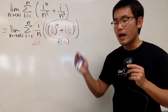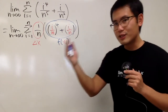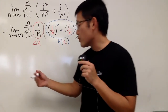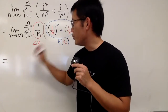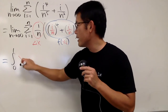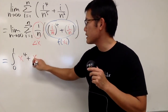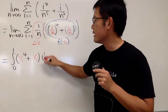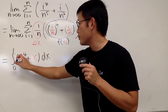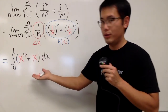So we're looking for the area under the curve x to the fourth plus x, from 0 to 1. And of course you can write this down as an integral first. This represents the integral from 0 to 1 of x to the fourth power plus x, and then the Δx is just the dx part. This right here represents the area, and of course we can compute the area by using this integral.